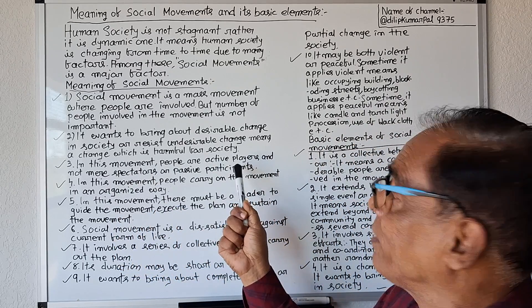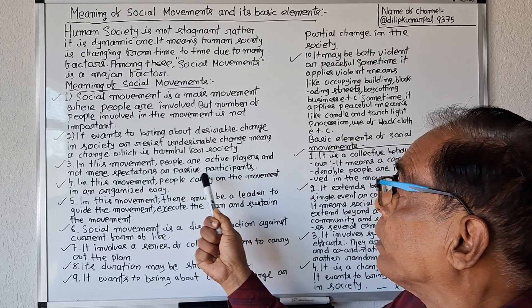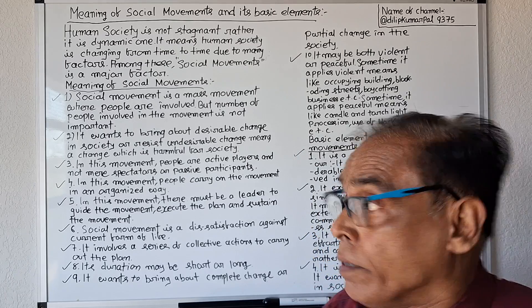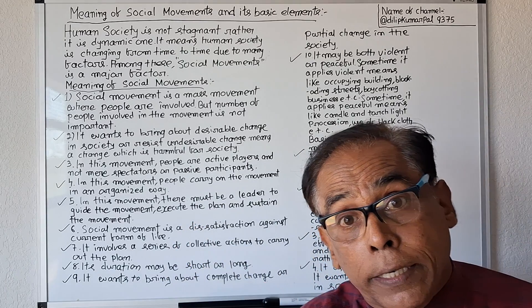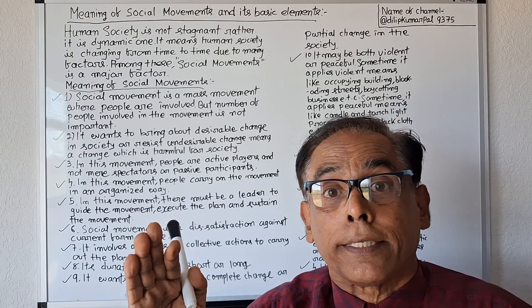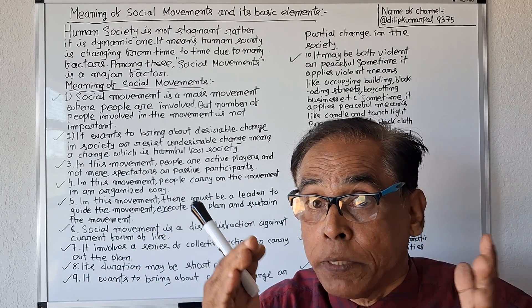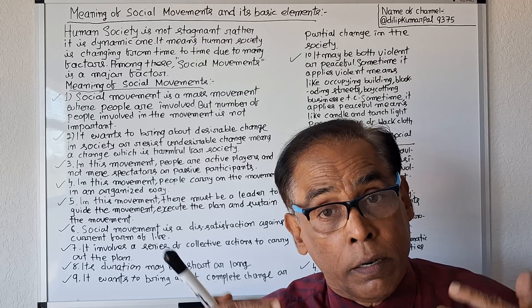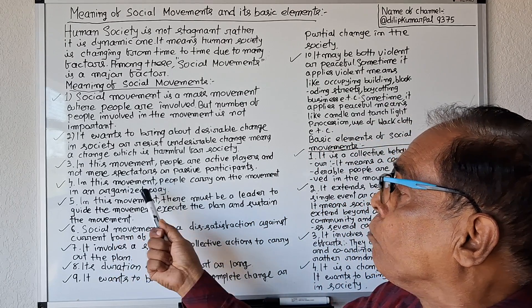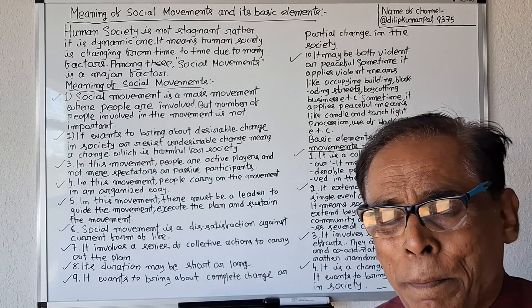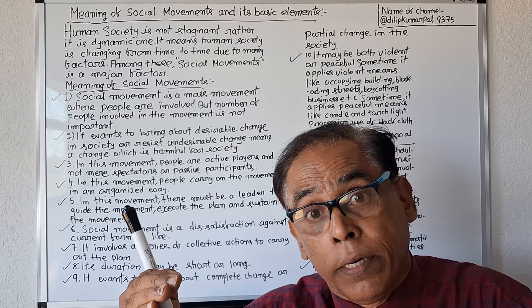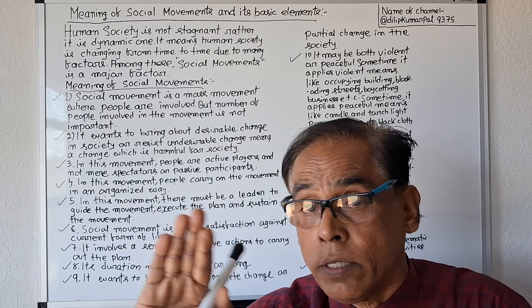Number three: in social movement, people are active players and not mere spectators — people are active, not passive. Number four: people carry on the movement in an organized way, not in a haphazard way.